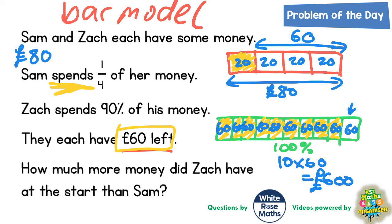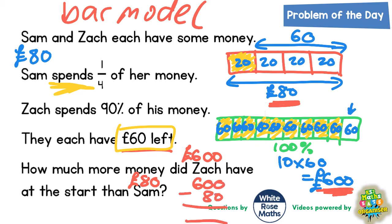Now we need to read the very final sentence: how much more did Zach have at the start than Sam? Zach had £600 and Sam started with £80, so we're finding how much more £600 is than £80. We'll solve this with a column method: £600 take away £80. 0 take 0 is 0; 0 take away 8 you can't do, so borrow — 10 take away 8 is 2, and 5 take away nothing is 5. So the final answer is £520. Zach had £520 more than Sam at the start.